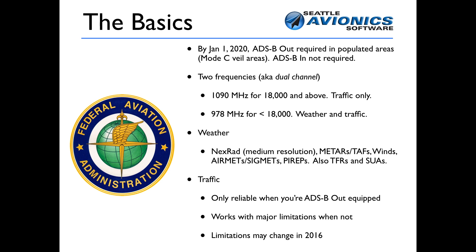If you have a certified system and you're broadcasting your own position to the FAA ground station, then it broadcasts back to you all the traffic that may be a factor for you. If your plane does not have ADS-B out, there are some major limitations on ADS-B traffic that you'll receive. Sometimes you'll see all traffic, sometimes some traffic, sometimes no traffic — and the big problem is you really can't tell which one you're receiving.